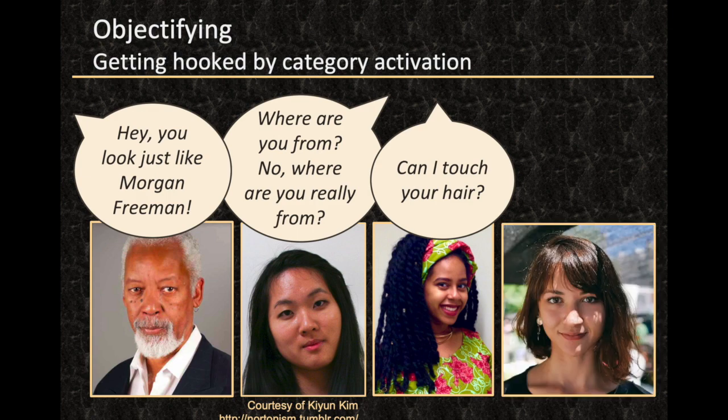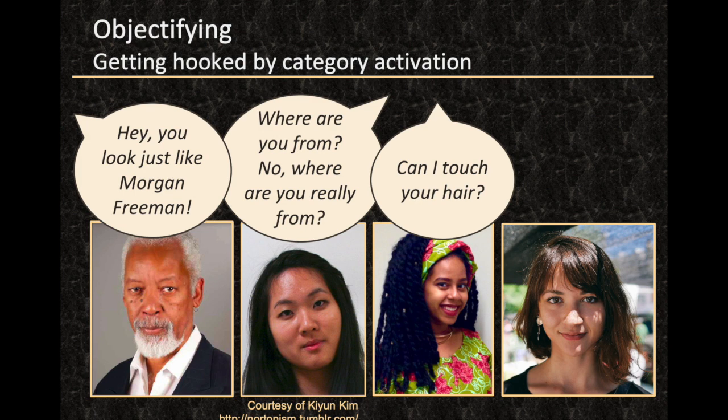You see a woman and you can't figure it out — the categorization process isn't working. Is she Asian? Is she Latinx? Is she white? I can't figure it out. So you get hooked and ask, 'What are you?' These are just some quick examples of objectifying. I think it'll be fun for us as a group to come up with other examples as well. But for now, I'm going to move on and give you some of the underlying science.